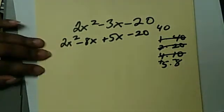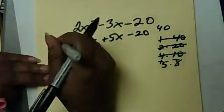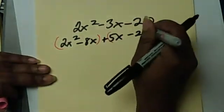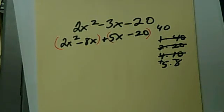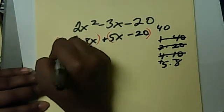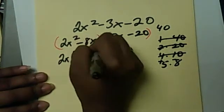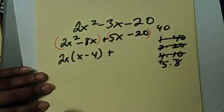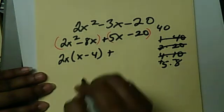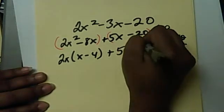Then you're going to get your grouping together. Group these, and group those. So now we're going to factor out. We're going to factor out a 2X, leaving us with X minus 4. Plus here, we're going to factor out what's in common, which is a 5. Leaving us again with X minus 4.